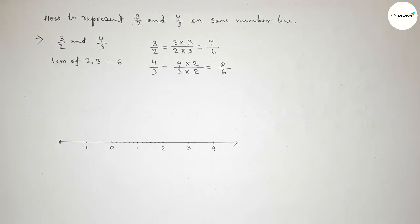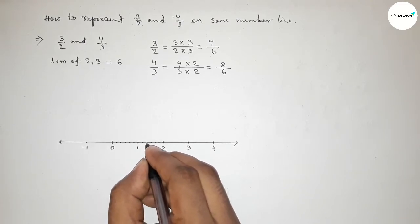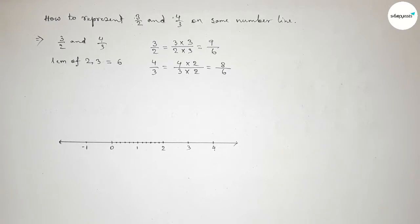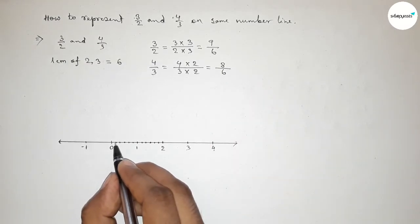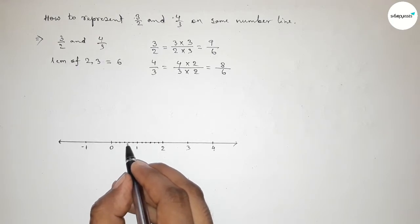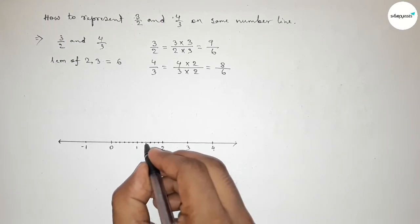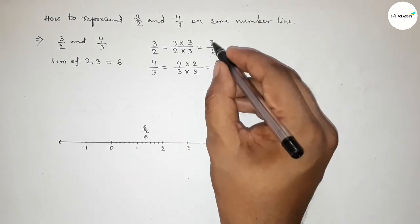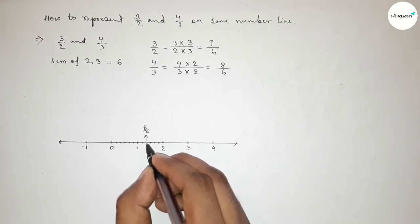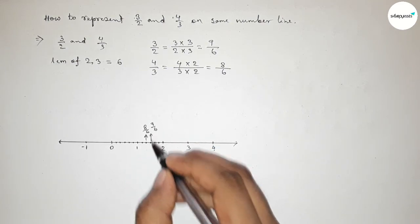Now marking the numbers on the line clearly. First counting 8 over 6: this is 1 over 6, 2 over 6, 3 over 6, 4 over 6, 5 over 6, 6 over 6, 7 over 6 — and this is 8 over 6. The next point is 9 over 6 on the number line.